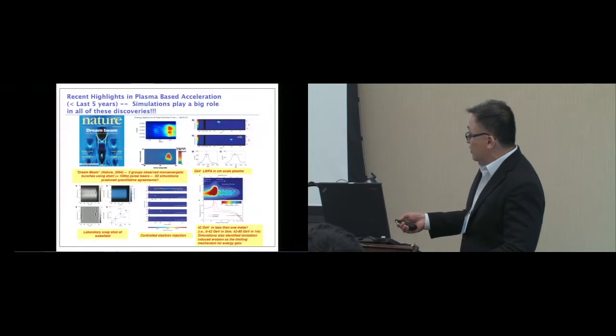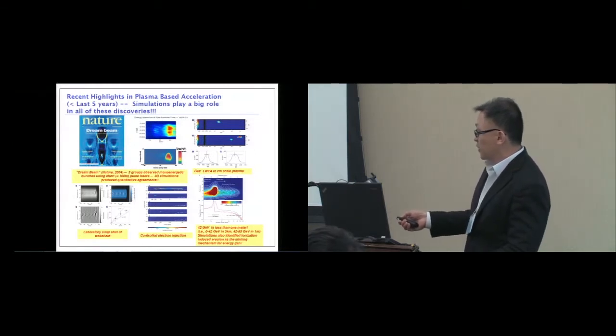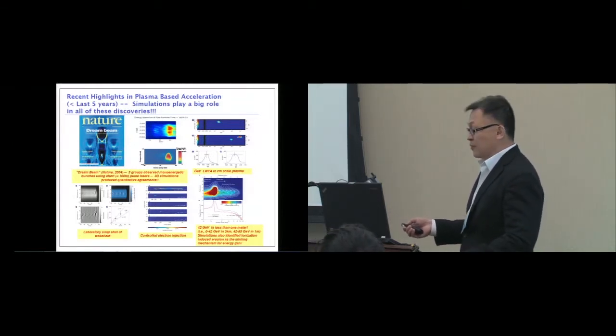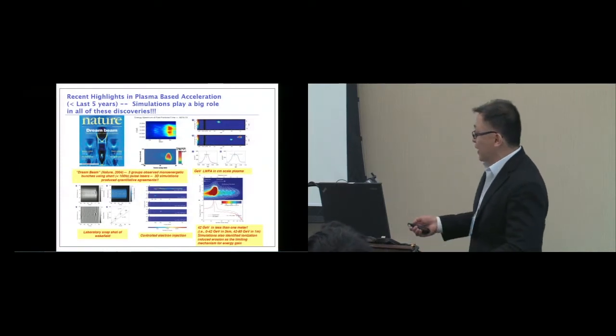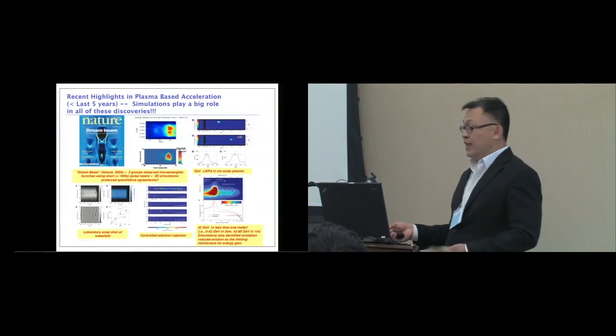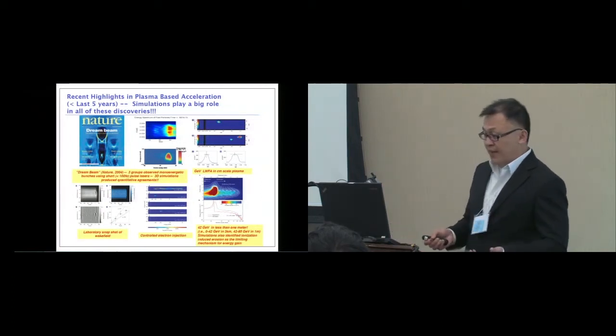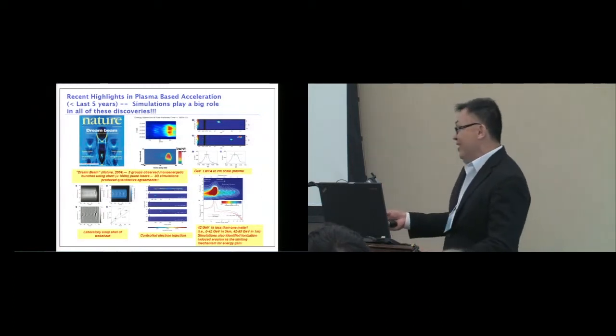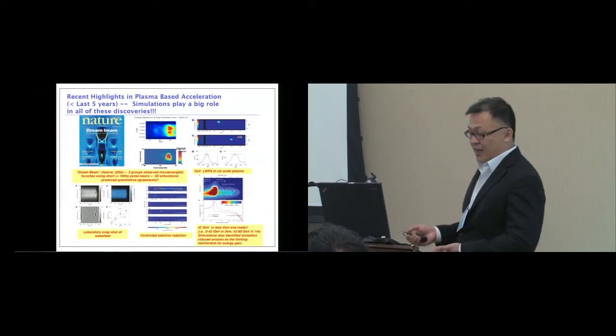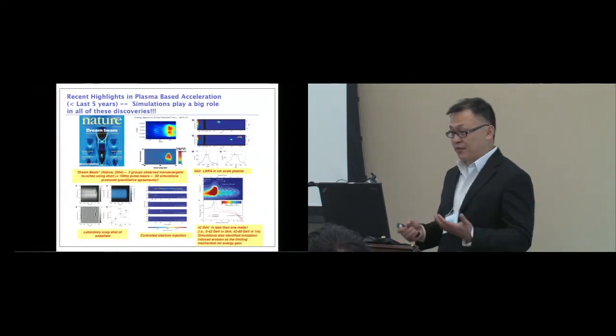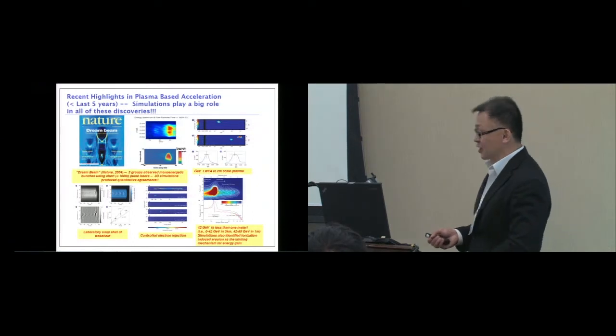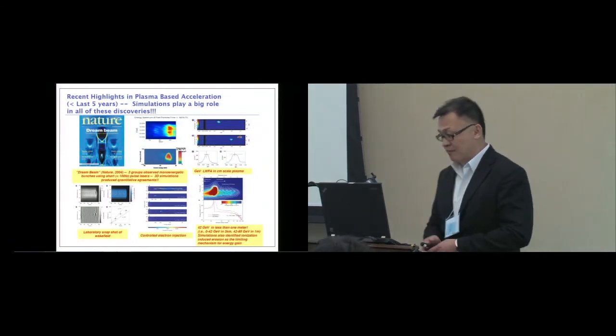Within one meter, we're able to achieve what it took three kilometers to achieve in the conventional accelerator. The blue curve is the energy spectrum from the experiment, and the red curve is a simulation done in our group. You can see good agreement between simulation and experiments. What's more, simulation provides insight as to why if you make the plasma longer, you are not going to get any more energy gain. There was actually a limitation for this particular experiment. In the next set of experiments, we expect to see more energy gain.